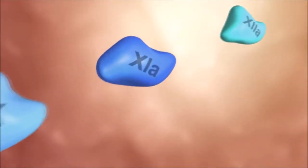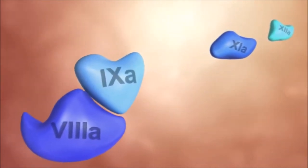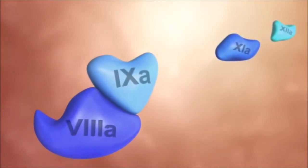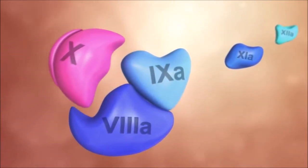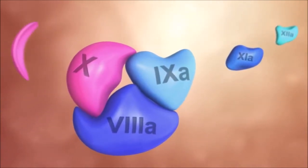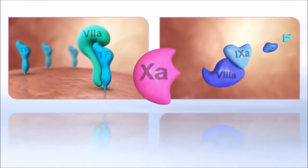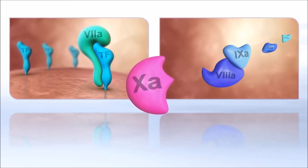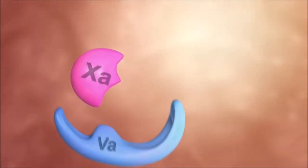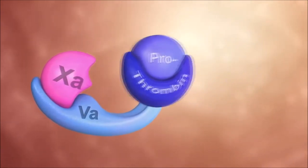The intrinsic pathway consists of various coagulation factors activating each other in a chain reaction. At its center, a complex with an additional cofactor is formed, and this complex activates factor 10. Since the two pathways merge at the level of factor 10a, this factor has a pivotal role in the coagulation cascade.